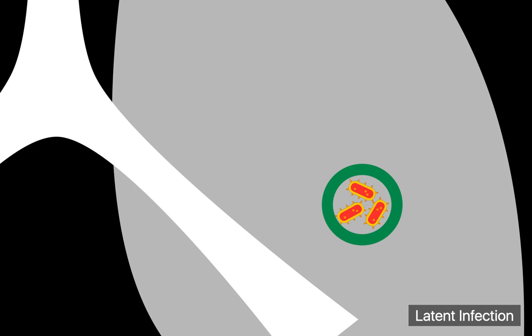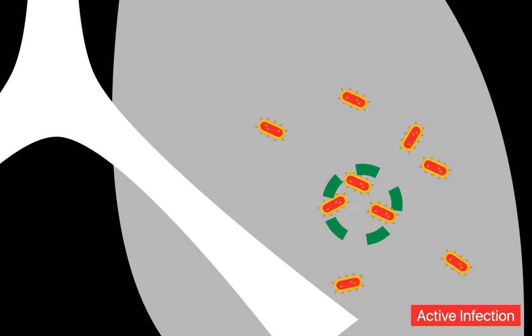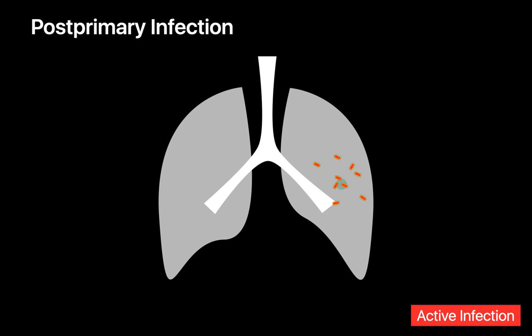In post-primary TB infection, sequestration fails and live, viable TB are free to multiply and spread throughout the lungs. In post-primary TB infections, the live, viable TB tend to have the most success flourishing in the upper lungs. That's because lymphatic flow rates are poorer in the upper lungs, and the lymphatics are the route most immunologic cells travel through in the lung. This makes the body's immune response weaker in the upper lungs, giving TB an advantage. And while all of this is happening, the patient is also highly contagious to others around them, as they may possibly spew live, viable TB out of their airways.